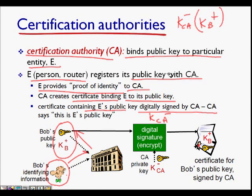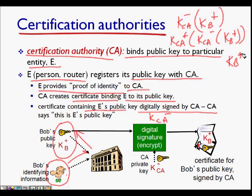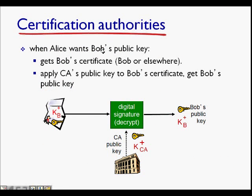Everyone has the public key of the CA, KCA plus. Using KCA plus, you can get the public key of Bob, and now it is trusted — it is known that this is the public key of Bob itself. No one can fake it. When you take that public key, it must be digitally signed by the certification authority, and all people abide by this.